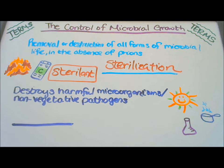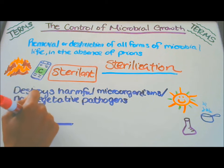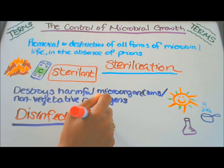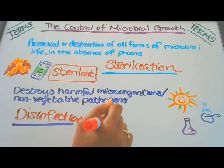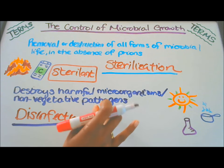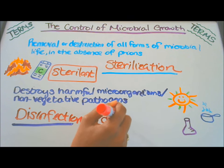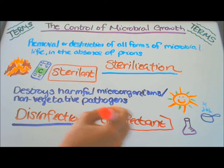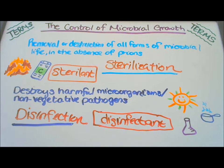Definition number two: destroys harmful microorganisms, or non-vegetative pathogens. Term number two is disinfection, and the disinfectant is the agent. Chemicals, UV radiation, boiling water, or steam can be used to disinfect an area and destroy harmful microorganisms or non-vegetative pathogens.